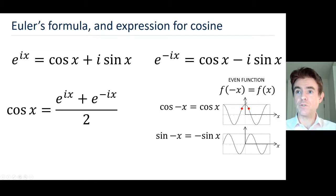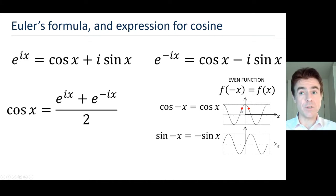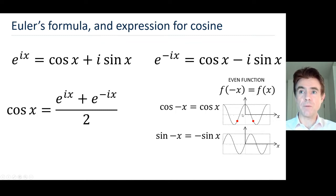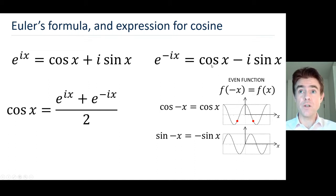Let's verify that. This is a plot of the cosine function. As we progress forwards along the x-axis, we get a value for the function at position x. And if we progress negatively by the same amount, the function value is equal. Another example: had we progressed a distance x to the right giving a negative function value, doing the same distance in the negative direction also gives the same negative value. That's an even function, so we can write cos x instead of cos minus x.